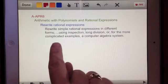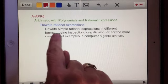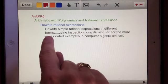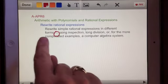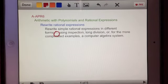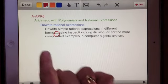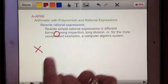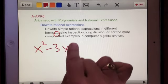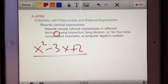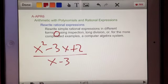A rational expression, in fact in this standard, it says rewrite simple rational expressions in different forms. For example, something I might call an algebraic fraction. If we saw something like this, that's a quadratic over a binomial, x minus 3.